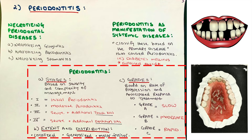Grades are the second half of periodontitis classification for clinical diagnosis. They are based on the rate of progression and anticipated response to treatment. There are Grades A, B, and C — slow, moderate, and rapid. The rule clinically is we always begin with Grade B and then use the chart that follows to determine whether we move the patient to Grade A or C. We always start with B.